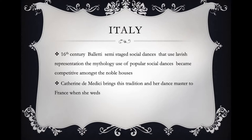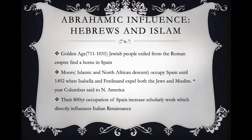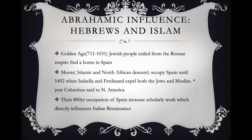Some of the groundwork mentioned in the 14th century during the Italian Renaissance actually happened before that, in relation to Hebrew and Islamic cultures — what I call the Abrahamic influence. The term 'Moor' in this context refers to people who practice Islam and/or people of North African descent.